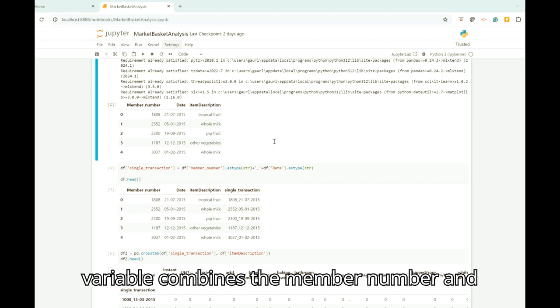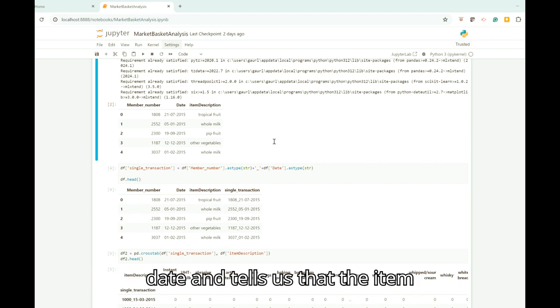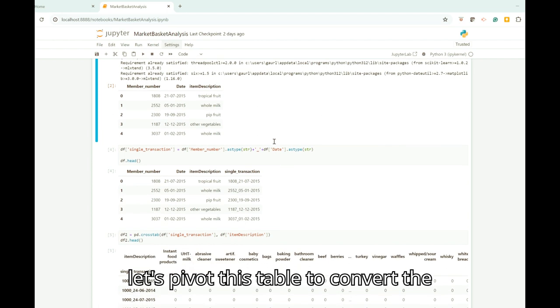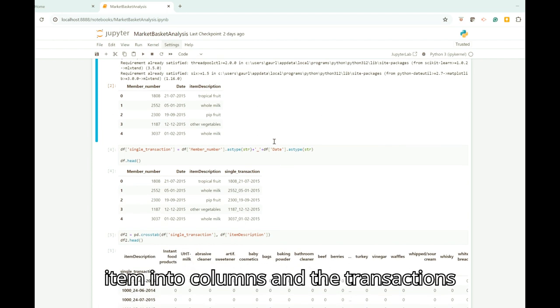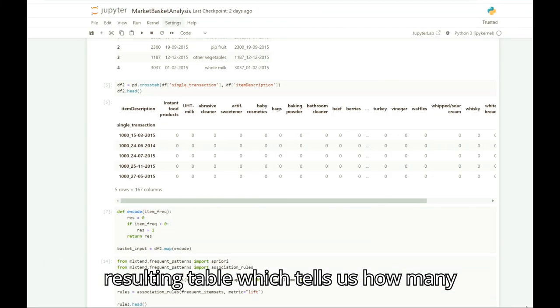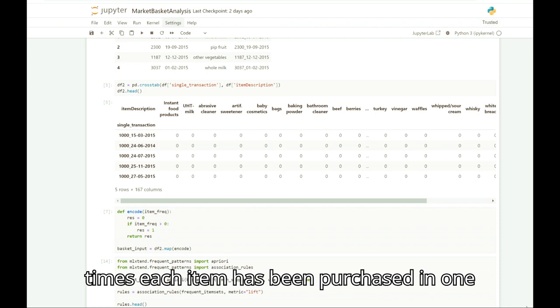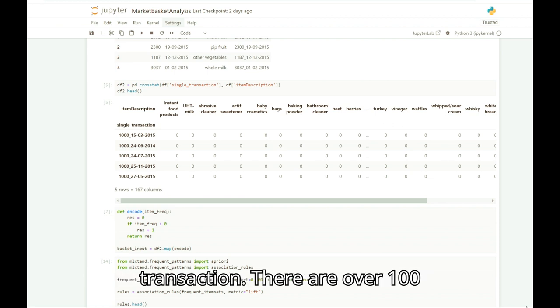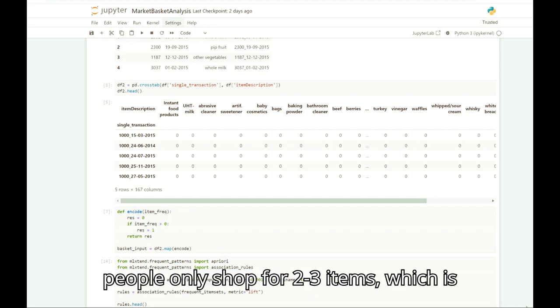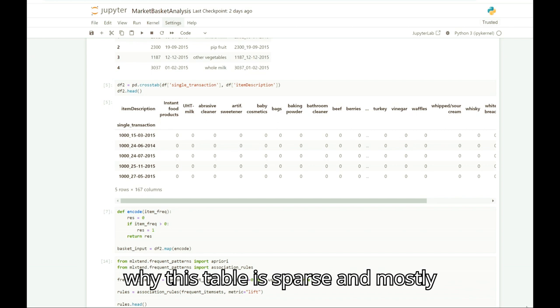The single transaction variable combines the member number and date and tells us the items purchased in one receipt. Now let's pivot this table to convert the items into columns and the transactions into rows. The resulting table tells us how many times each item has been purchased in one transaction. There are over a hundred columns with most people only shopping for two or three items, which is why this table is sparse and mostly comprised of zeros.